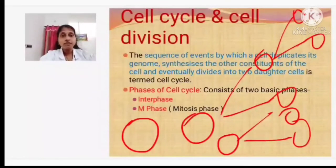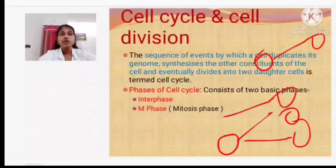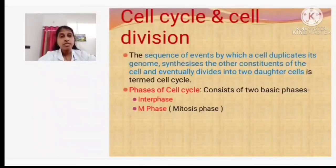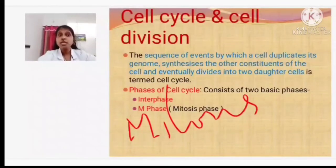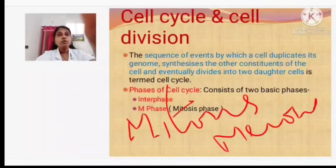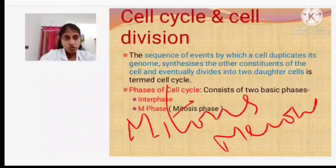When speaking about cell cycle or cell division, there are two types of cell division. The first type is mitosis and the second is meiosis. Today, what we are going to discuss is mitosis.